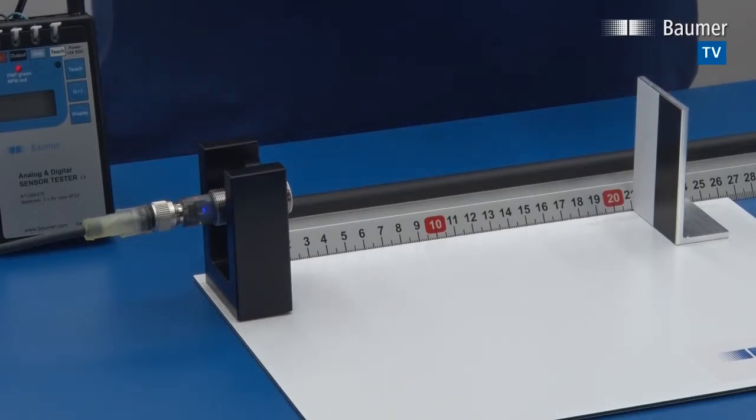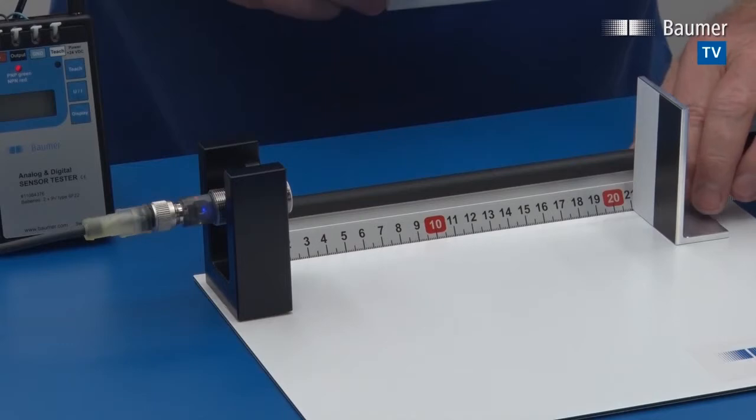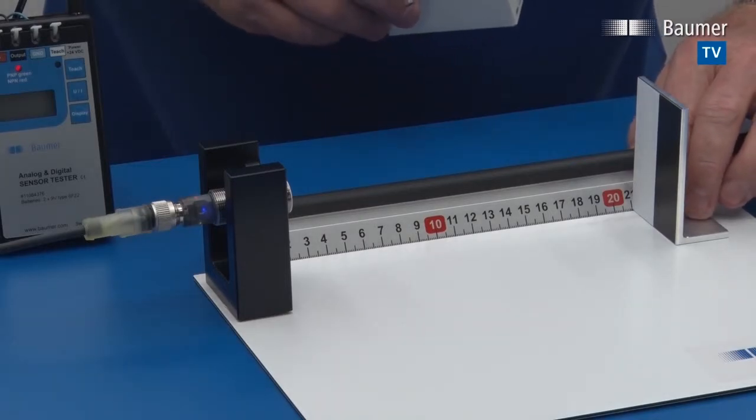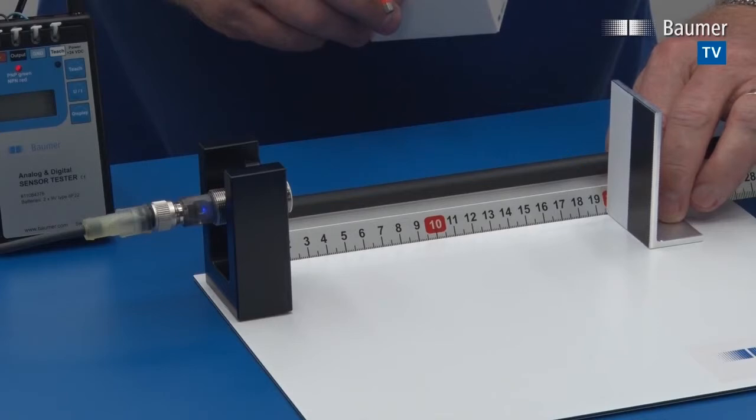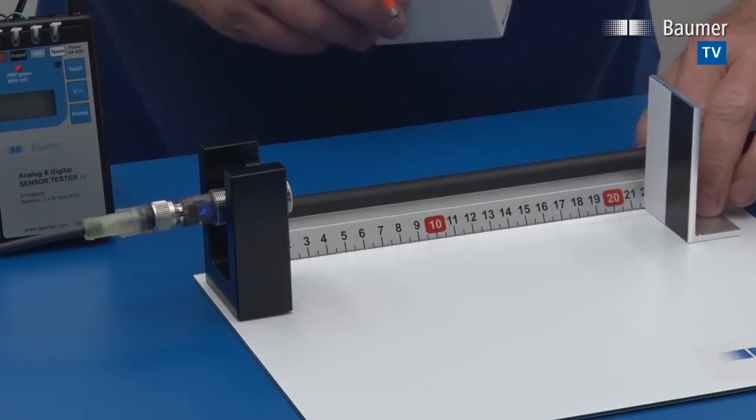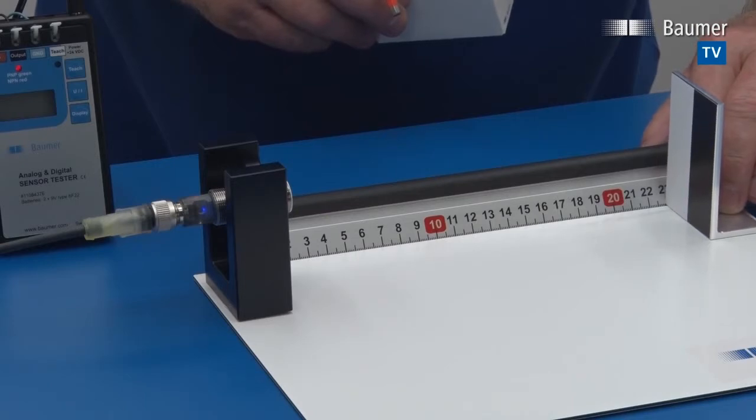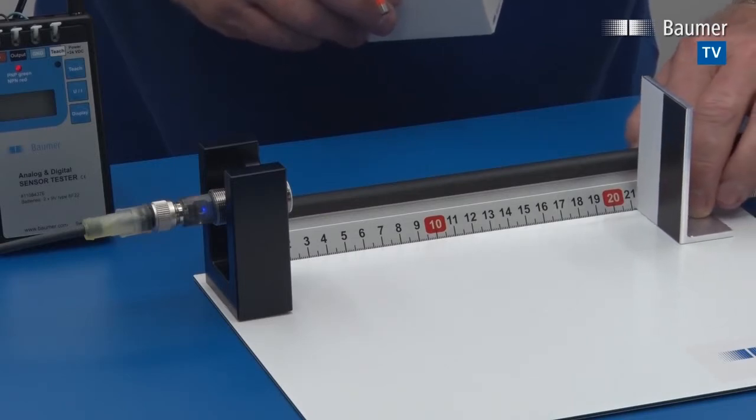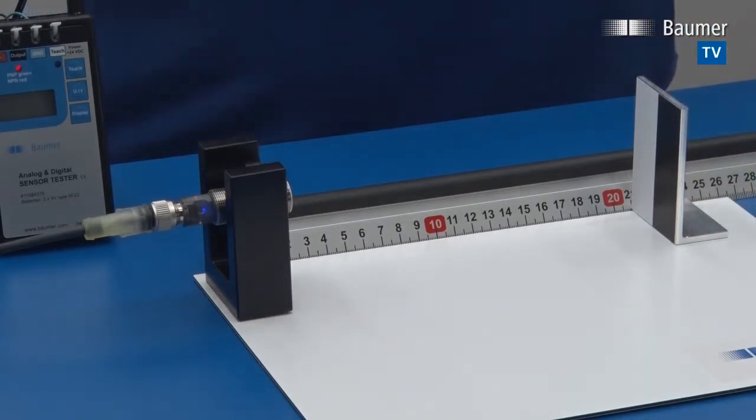the allowance of movement of the reference target, which is now plus-minus ten percent as compared to plus-minus five percent in teach mode one. Certain applications might require that the reference target moves a bit more, and then this is the mode to choose, teach level two.